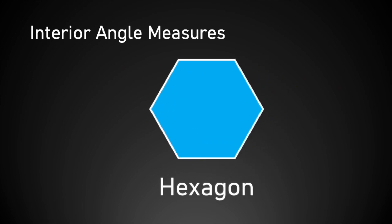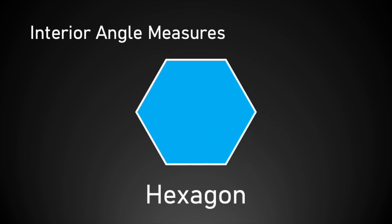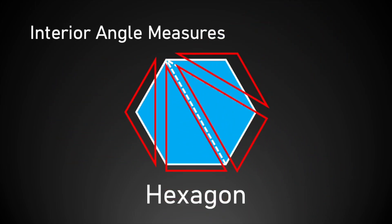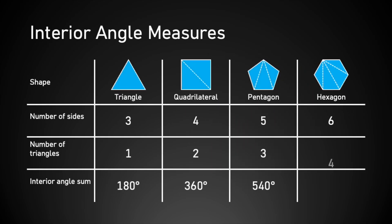Let's fill in the column for the hexagon. I'll pick a vertex to start with, and draw diagonals to every non-consecutive vertex — here, here, and here. So now I have four triangles, all of which share their vertices with the hexagon. Four triangles give an interior angle sum of 4 times 180 degrees, which is 720 degrees. I hope you've noticed the pattern: in any polygon, if n is the number of sides, then the number of triangles is n minus 2, and the interior angle sum is (n − 2) × 180 degrees.